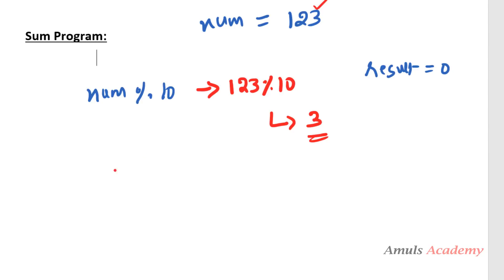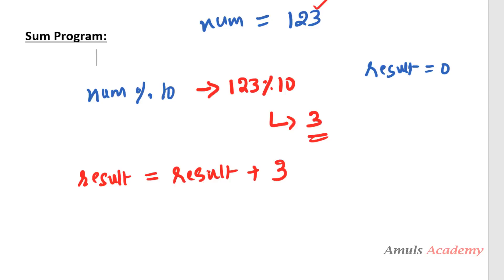Using the modulus operation I got digit 3. Now I need to add it to result. So I write: result = result + digit. Initially result was 0, so 0 + 3 gives result = 3. We applied modulus on the number, got the digit, and added it to result.